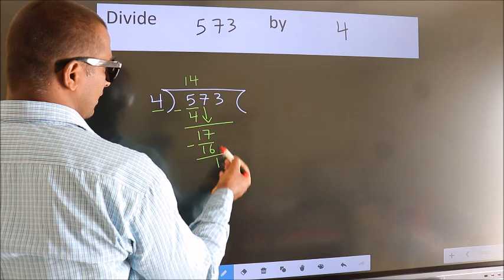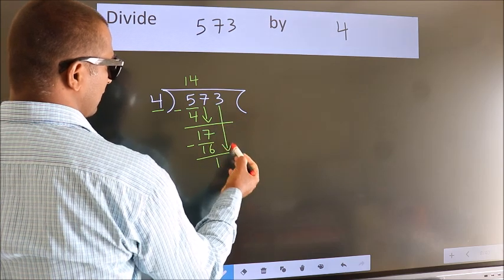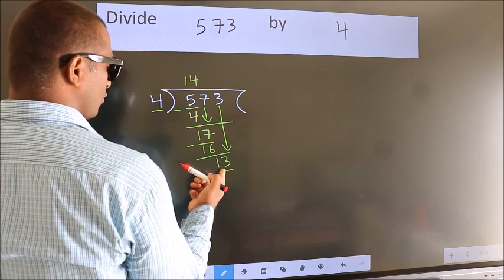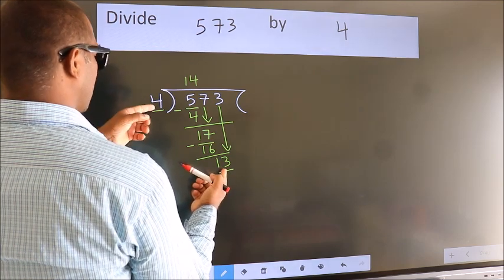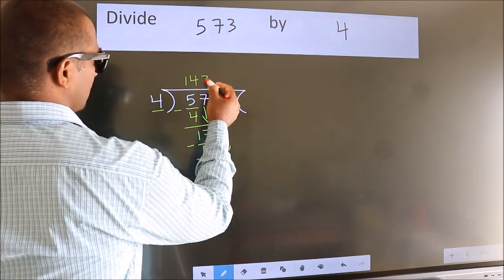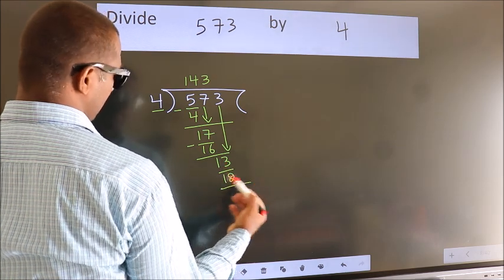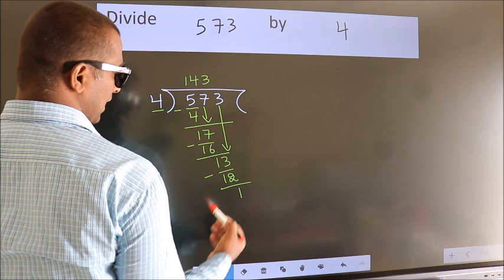After this, bring down the beside number. So 3 down, giving us 13. A number close to 13 in the 4 table is 4 threes, 12. Now we subtract. We get 1.